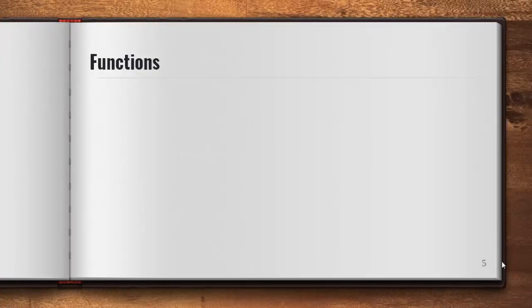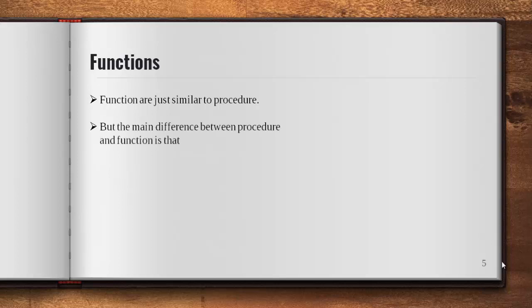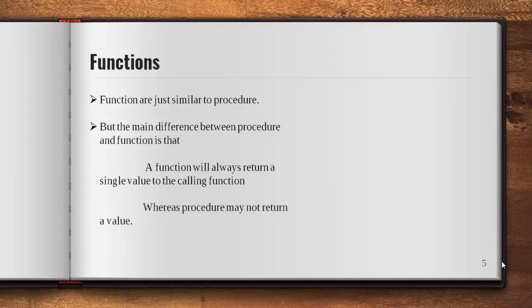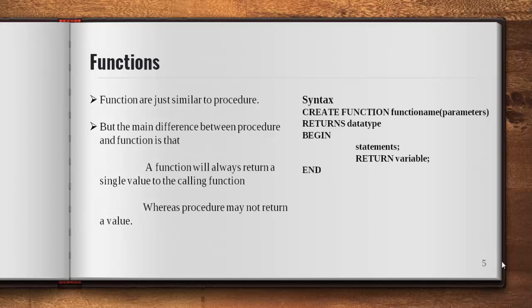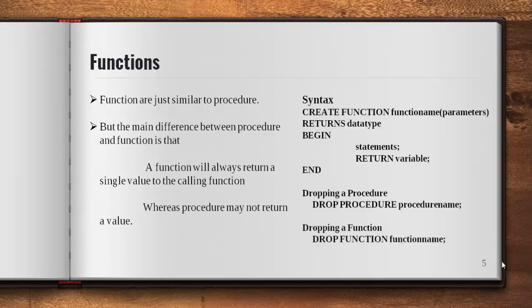Now let's look at functions. Functions are similar to procedures, but the key difference is that a function always returns a value whereas a procedure never returns a value. The syntax for creating a function is: CREATE FUNCTION function_name(parameters) RETURNS datatype, and at the end you use the RETURN statement. To drop a procedure or function, use DROP PROCEDURE or DROP FUNCTION followed by the name.